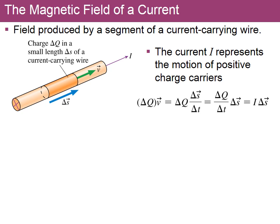Now let's calculate the field produced by a straight wire. We have a conductor with current pointing in a given direction, so charges are moving along it. The number of charges passing through a cross-sectional counter in time delta-t is given by velocity times delta-t, which gives the length. This gives us delta-q divided by delta-t, which is the current — and the product of charge and velocity is what we need for what follows.